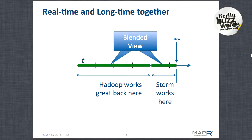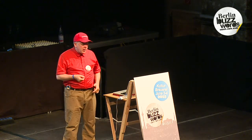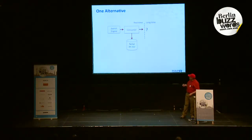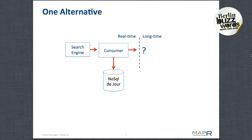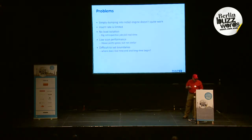What we want is a blended view between real-time and long-time, and we want that blend to be perfect — no gap, no overlap. One traditional way is people put some sort of search engine producing logs and then a consumer, gluing in a NoSQL store like Cassandra or HBase. But there is no sense of accuracy in deciding what's in the NoSQL database versus the long-time database. You can do long-time queries and real-time, but you cannot join them easily.